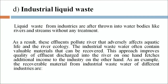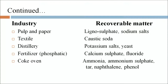Industrial liquid waste from industries is often thrown into water bodies like rivers and streams without treatment. As a result, these effluents pollute rivers, adversely affecting aquatic life and river ecology. Industrial wastewater often contains valuable materials that can be recovered. For example, from paper and pulp industries: lignosulphonate and sodium salt; textile industry: caustic soda; distillery industry: potassium salt and yeast; fertilizer industries: calcium sulphate, fluoride, ammonia, ammonium sulphate, tar, naphthalene and phenol.